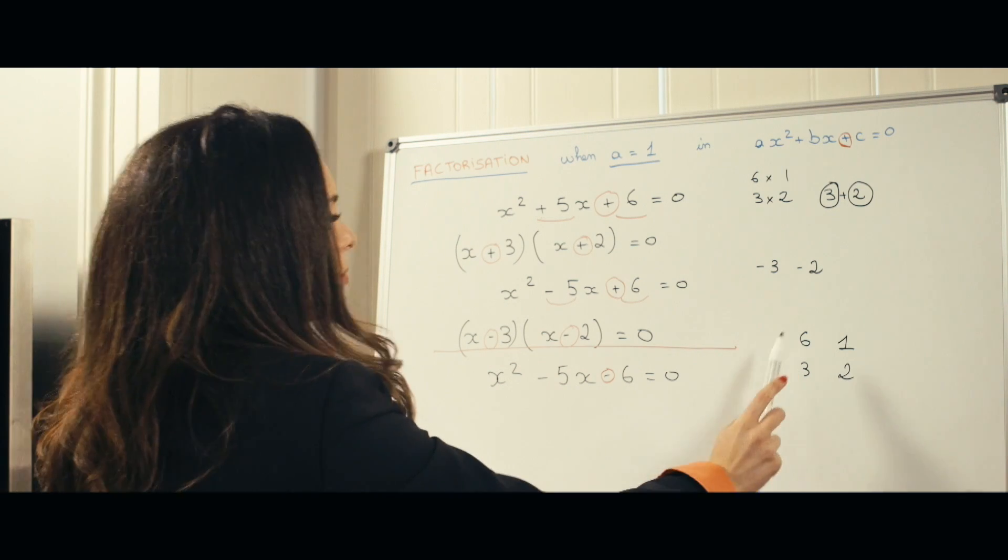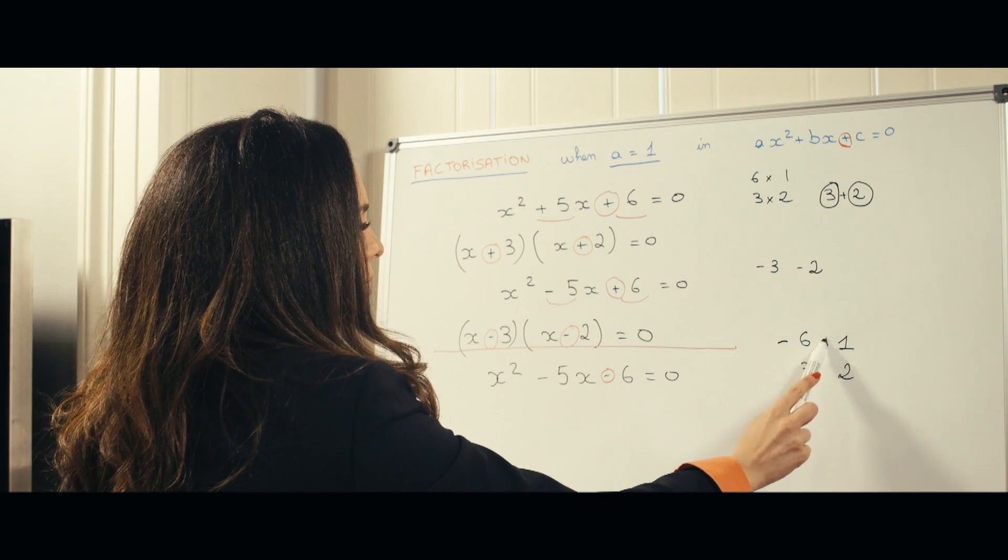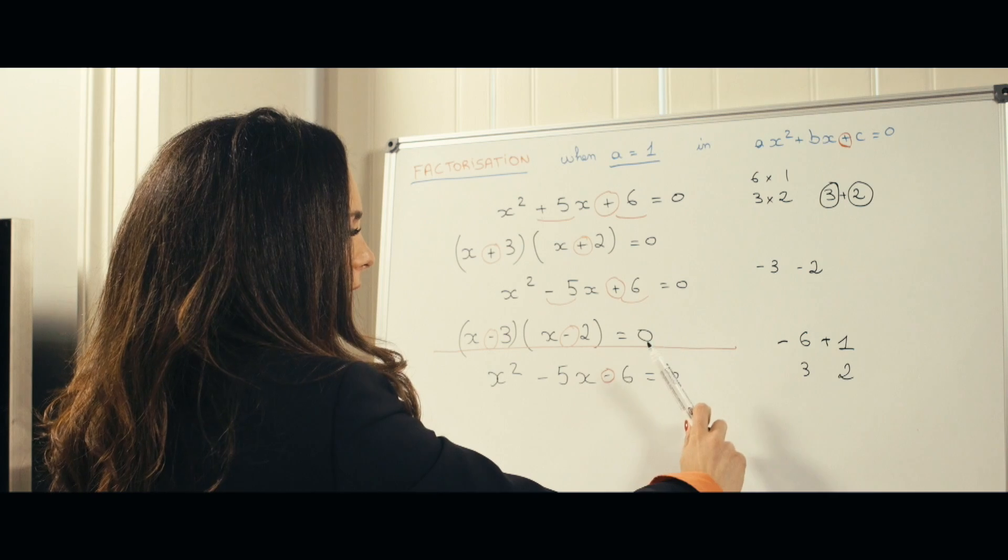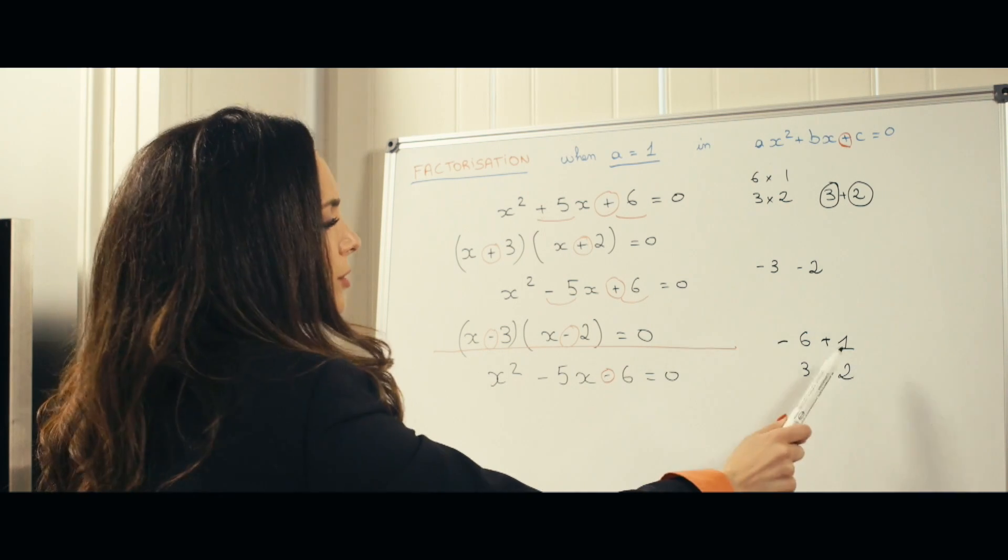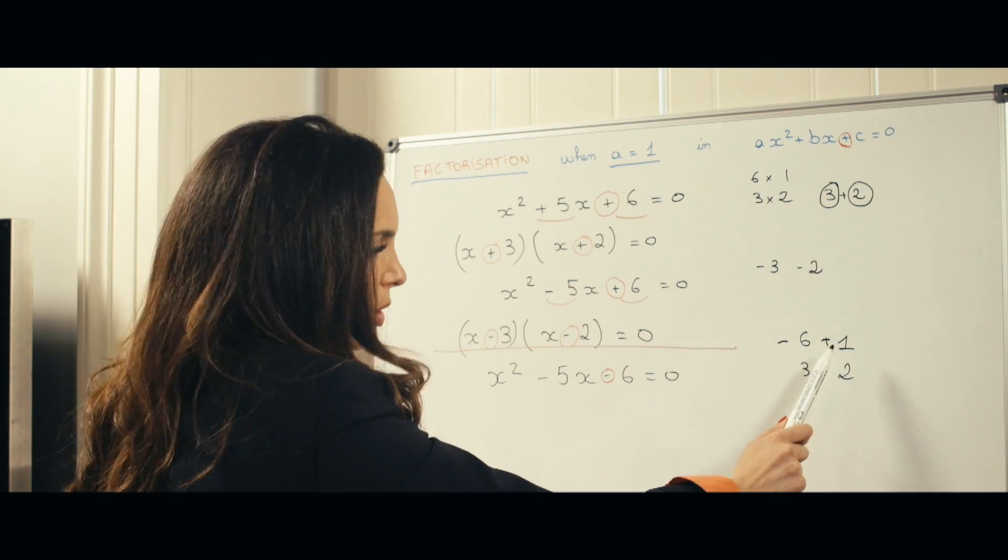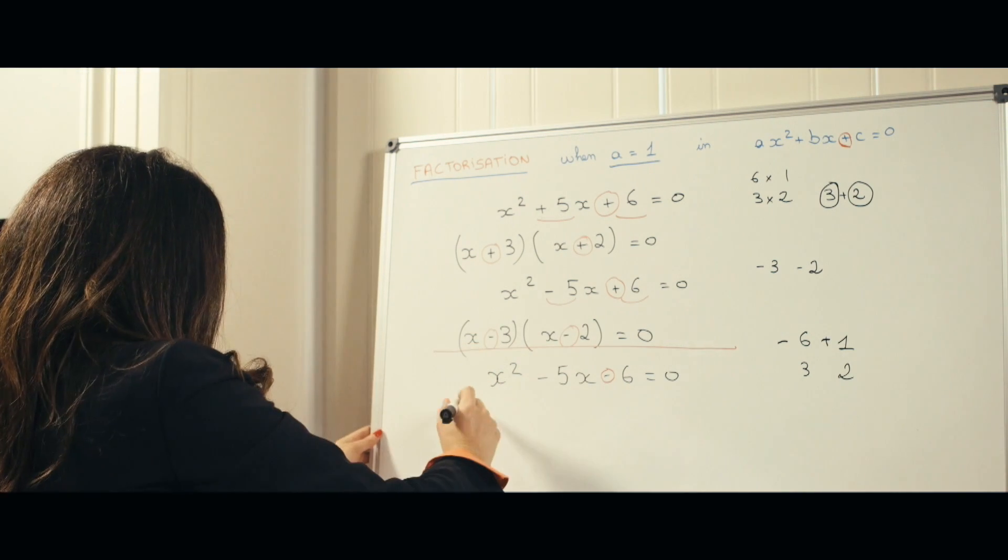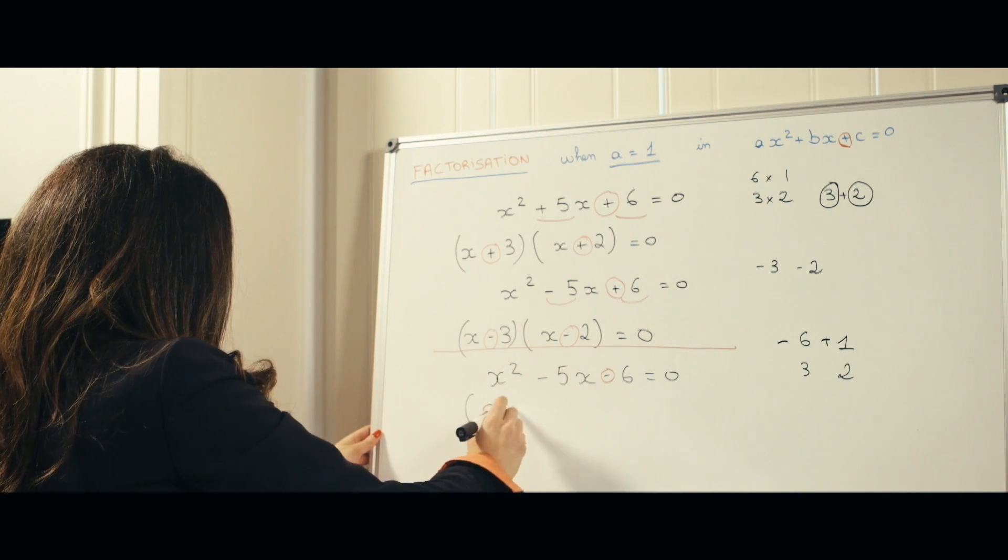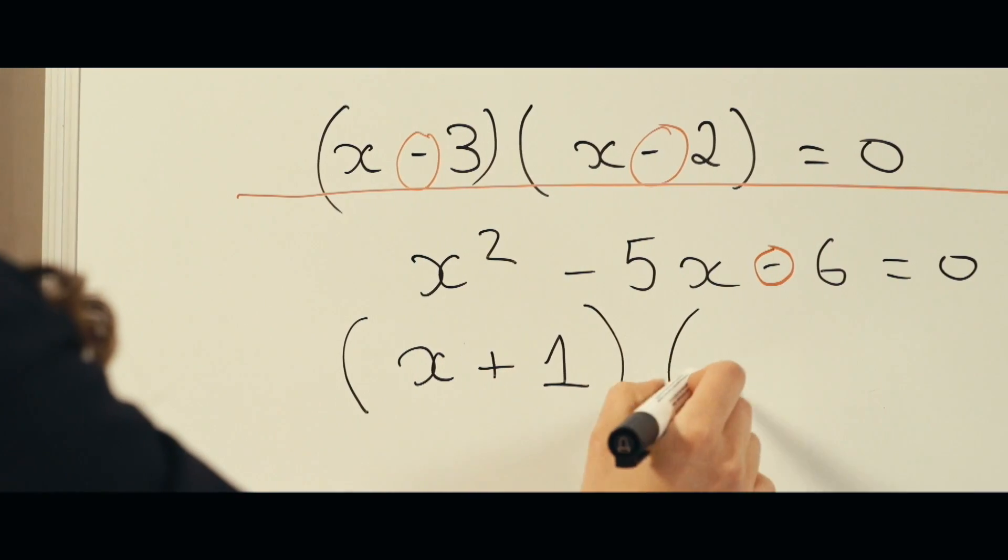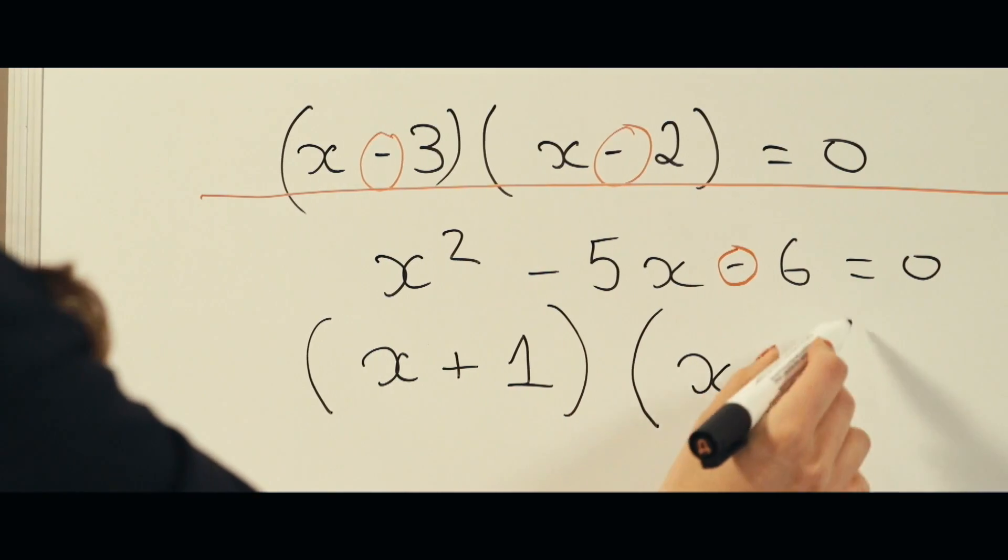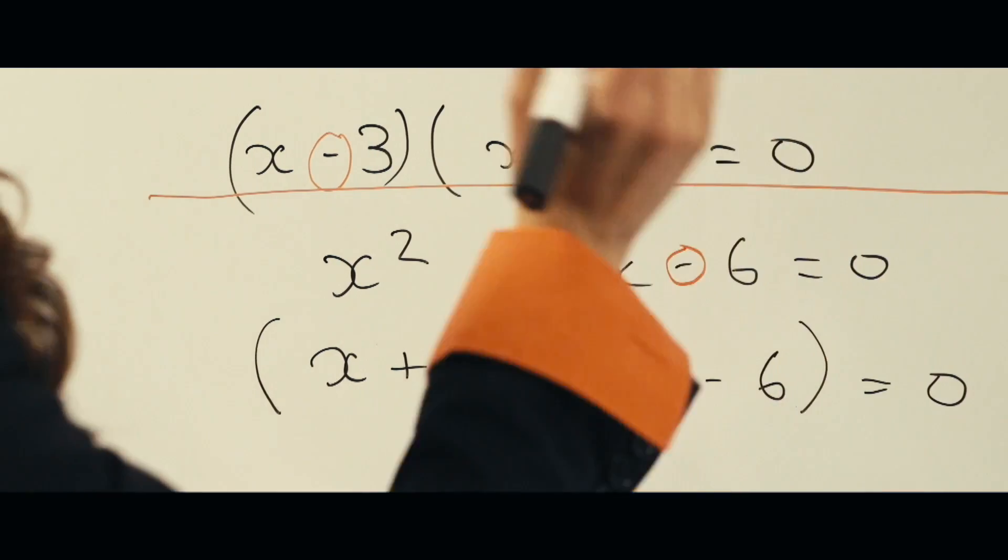So if I were to pick minus 6 and plus 1, that's minus 5. And then the multiplication of minus 6 times plus 1 is minus 6. So the answer here would be x plus 1 times x minus 6, which is equal to 0.